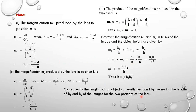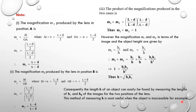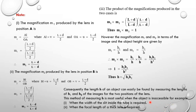Consequently, the height H of an object can easily be found by measuring the image heights H1 and H2 for the two positions of the lens. This method is most useful when the object is inaccessible — for example, when the width of a slit inside a tube is required, or when the focal length of a thick lens is required.